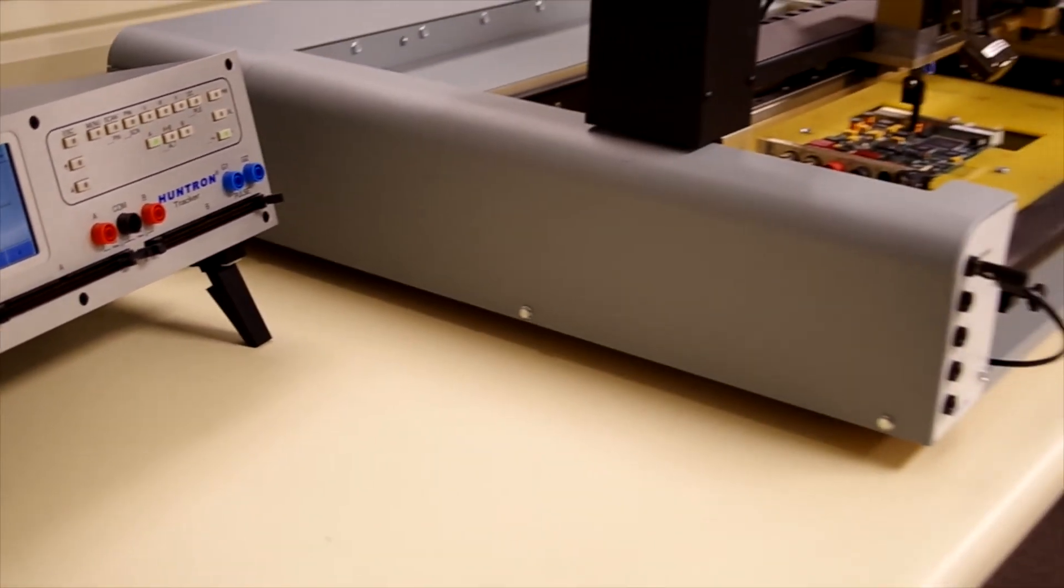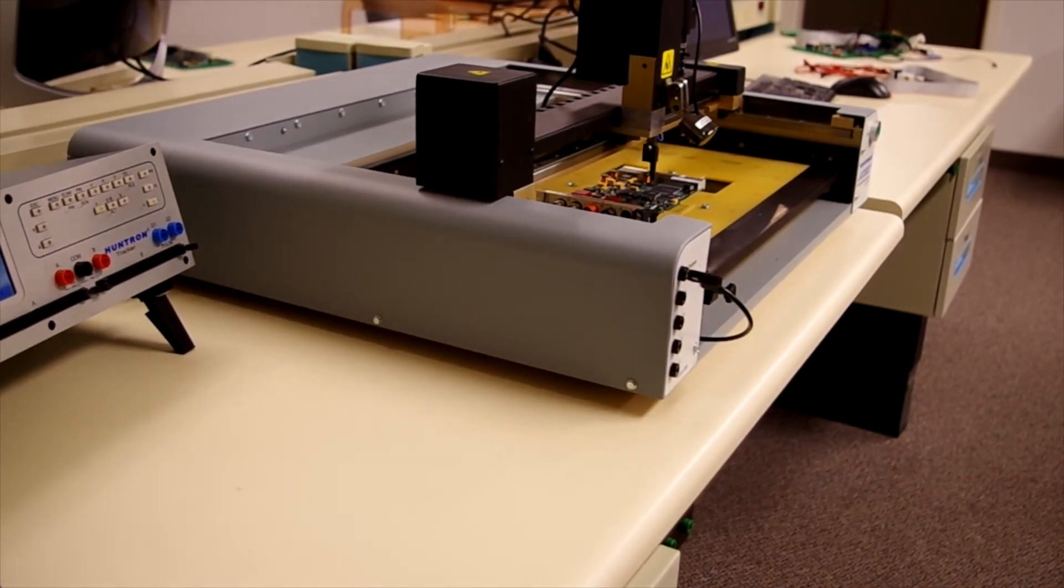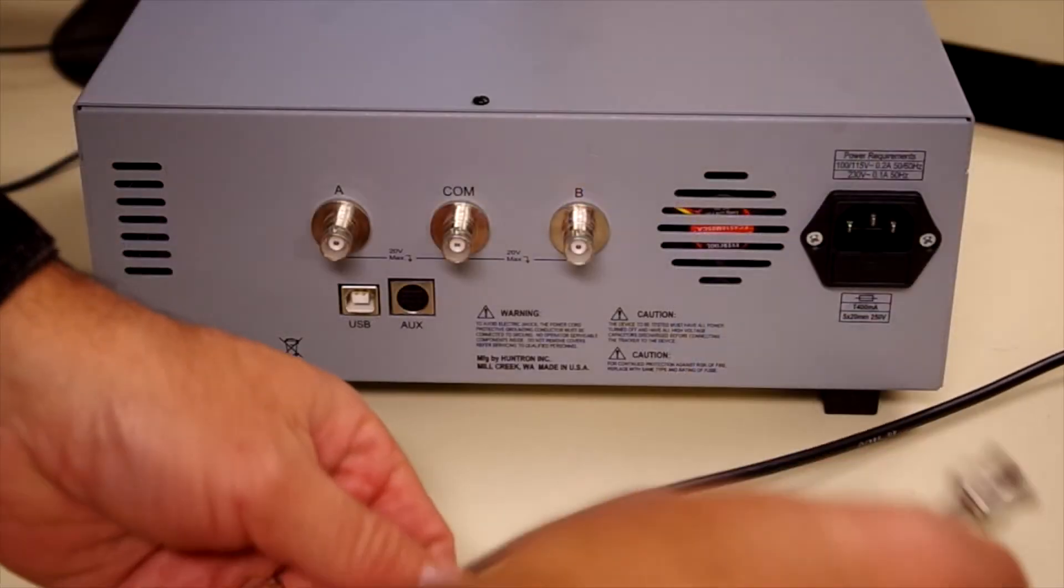The tracker 3200S is built to easily interface the Huntron access probers for full automation of testing processes that would normally be done manually.